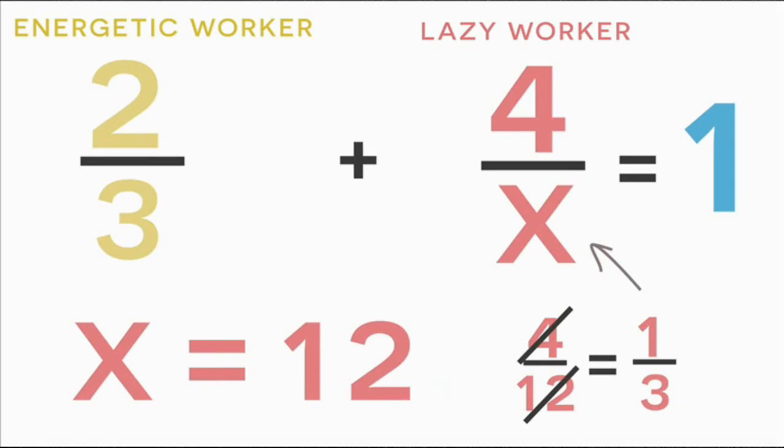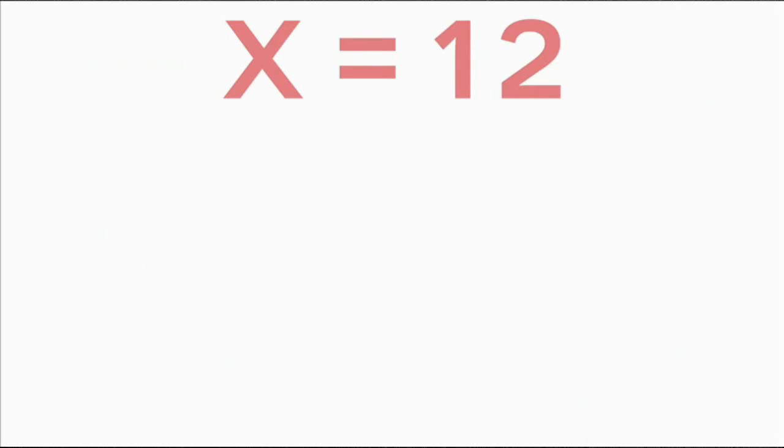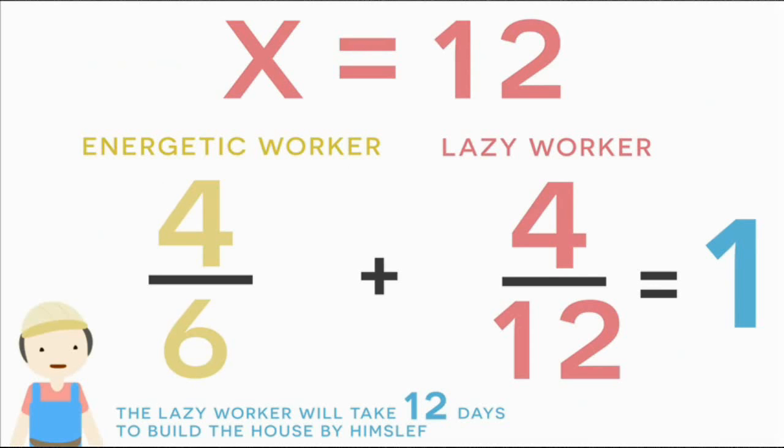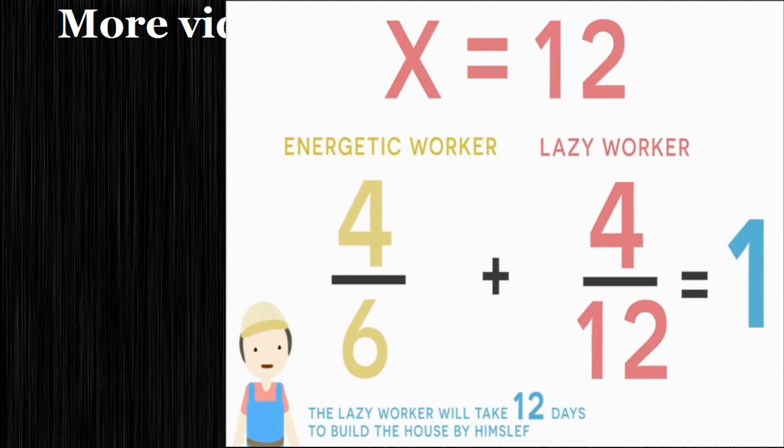If x is equal to twelve, that means the lazy worker will take twelve days by himself to build the house. And this is the solution to our word problem.